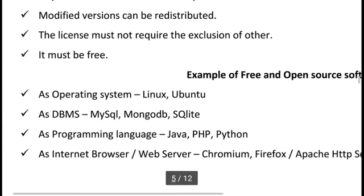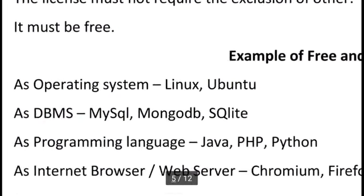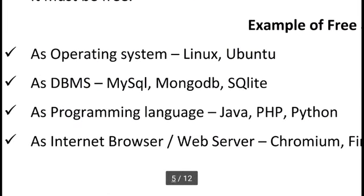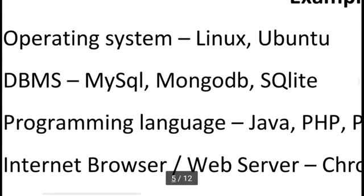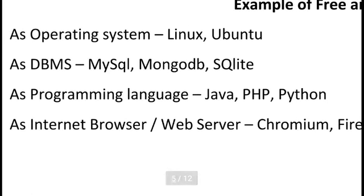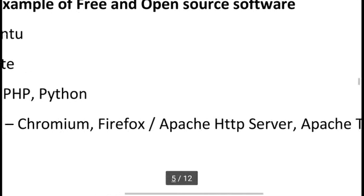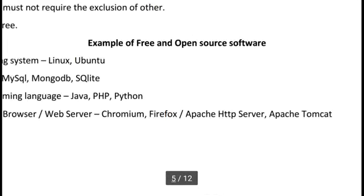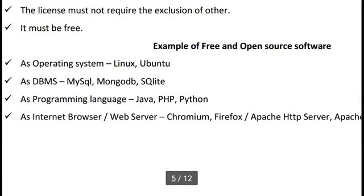Examples of free and open source software: operating systems — Linux and Ubuntu, which you can freely download and install. DBMS — MySQL, MongoDB, SQL, SQLite. Programming languages — Java, PHP, Python. Internet browsers — Chromium, Firefox. Servers — Apache HTTP Server, Apache Tomcat. These belong to the FOSS category — you can download, change the coding, and share freely.